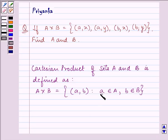These are the elements: element a belongs to set A and element b belongs to set B. The set of all ordered pairs for all a and b.